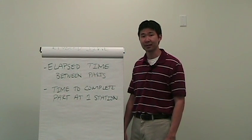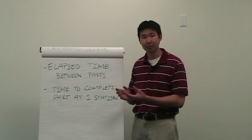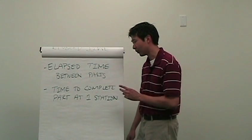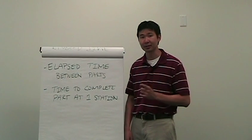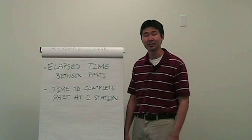Now there's two ways to observe cycle time. The first is to observe the elapsed time between good parts that are produced. The second way is to measure an operator at a single station complete one complete cycle or good part at his station. Both of these are identical.